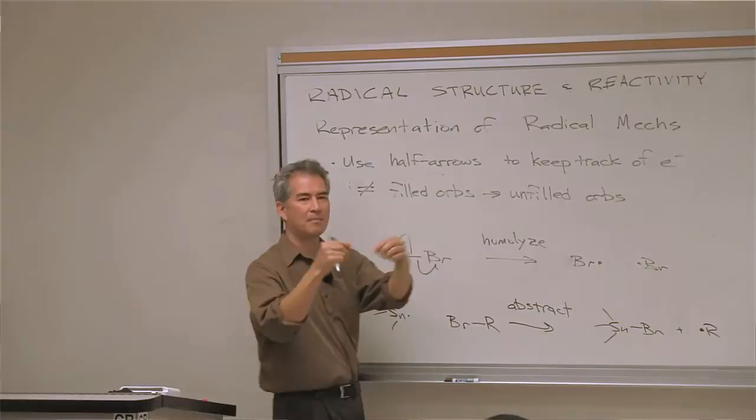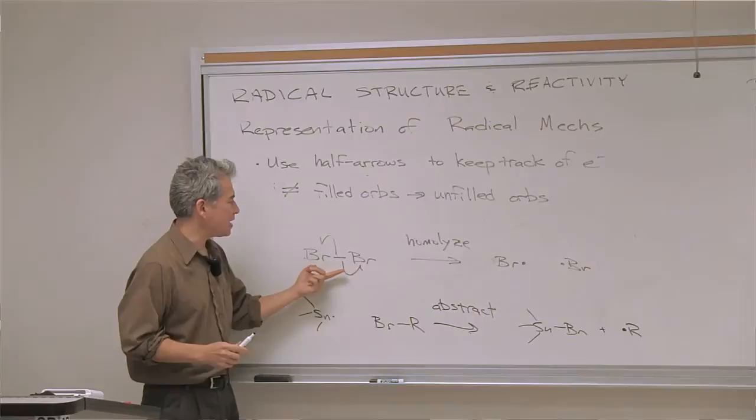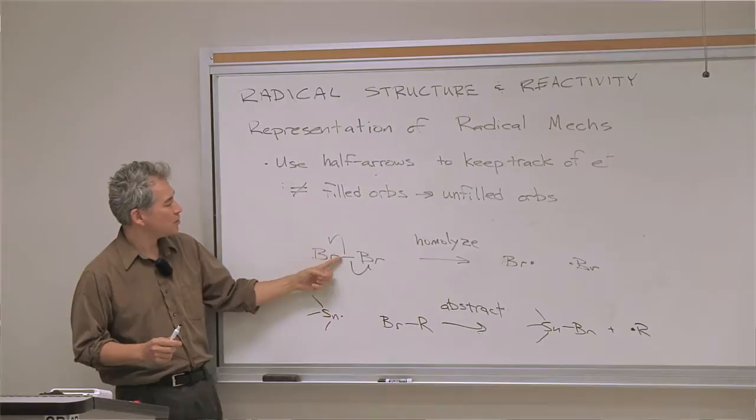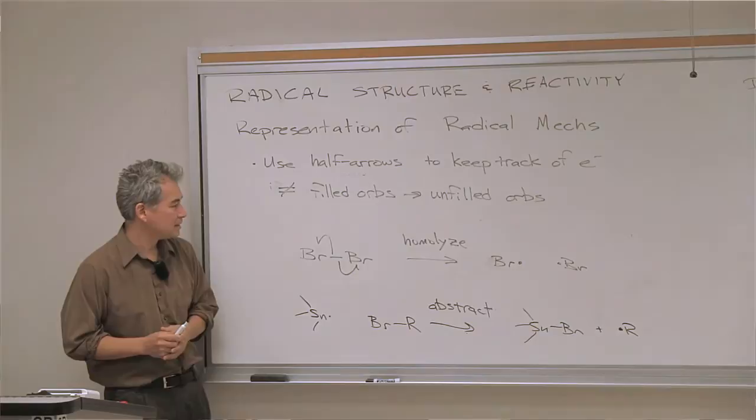The first process is bond homolysis — a regular covalent bond popping apart to give two radicals. We say the bond homolyzes, and we use two half-headed half arrows to represent this homolysis. There's a bond with two electrons: one electron goes to this bromine, and the other electron goes to that bromine. That's what those fish hook, those half arrows, mean.